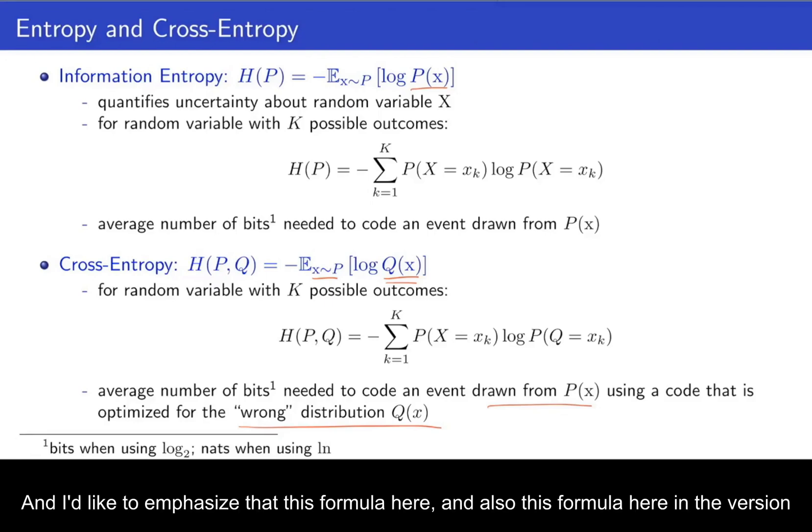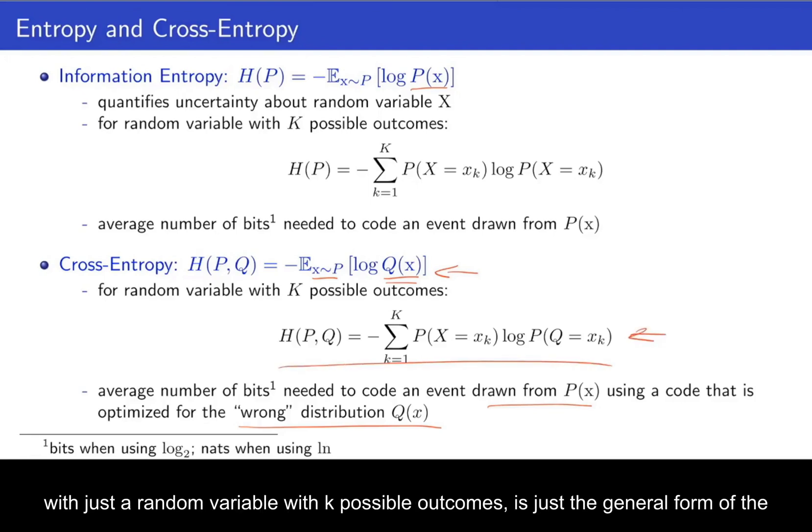And I'd like to emphasize that this formula here, and also this formula here in the version with just a random variable with k possible outcomes, is just the general form of the cross-entropy loss that we've already seen before.